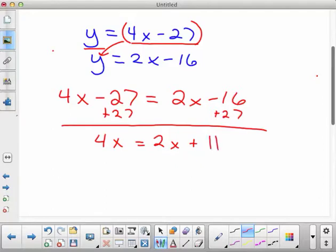And so you have 4x equals 2x plus, well negative 16 plus 27 is 11. And then I guess I skipped over it, but 27 minus 27 is 0. So that's gone.